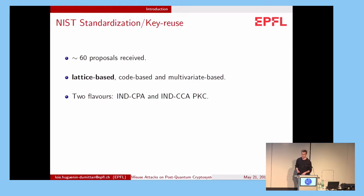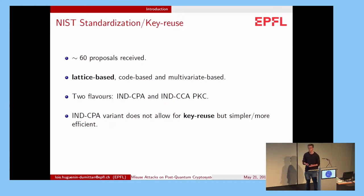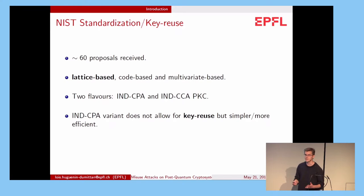In turn, each of these proposals comes in two flavors: an IND-CPA variant and an IND-CCA variant, which is usually the Fujisaki-Okamoto transform of the IND-CPA variant. Now the thing is, the IND-CPA variant does not allow for key reuse. That means for each new message we must pick a new secret key. But it's also simpler and more efficient, so we think people will try to use it. And in addition, if the Fujisaki-Okamoto transform is badly implemented in the IND-CCA scheme, then it can leak some information about the underlying IND-CPA scheme.